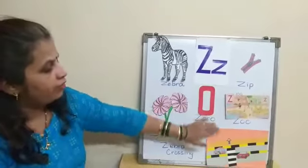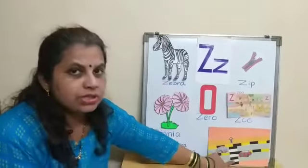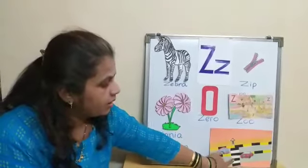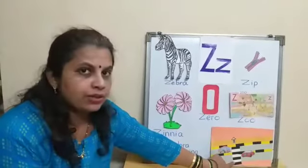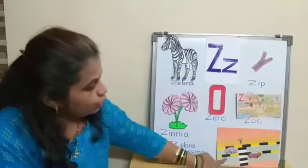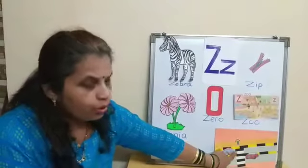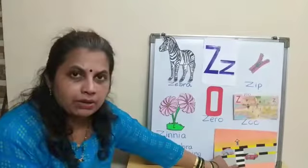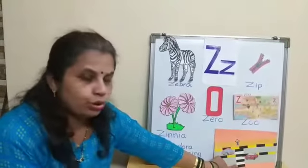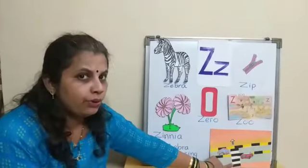Z for zebra crossing. You should always cross the road on zebra crossing. Not to run on the road.